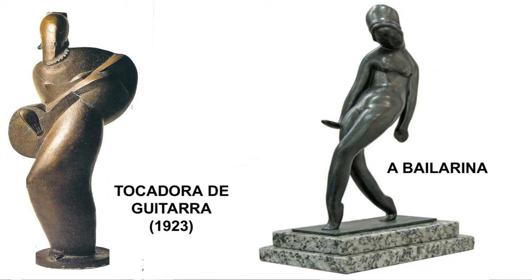Nessa sequência nós temos duas peças bem curiosas: Tocadora de Guitarra e a Bailarina. Note que a bailarina já tem formas mais naturais. O destaque que ele está dando é para a ideia de movimentação. E quando você fala de movimento, dinamismo, em uma pintura ou escultura, você está lembrando de futurismo. Olha como ele sai do cubismo da Cabeça de Cristo e vem para o futurismo, e depois retorna ao cubismo, pois a Tocadora de Guitarra dá a entender que está parada — o grande destaque são as formas, linhas retas e arredondadas.